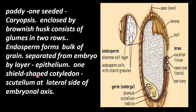One shield-shaped cotyledon — single cotyledon, so it is monocot — is called the scutellum. This cotyledon is called scutellum, on the lateral side of the embryonal axis. These are the lateral sides of the embryonal axis.